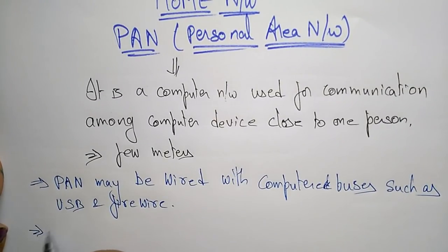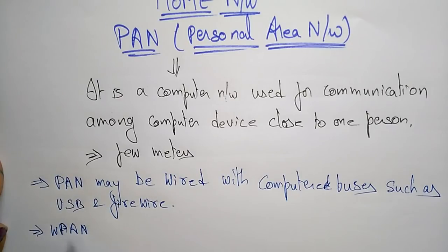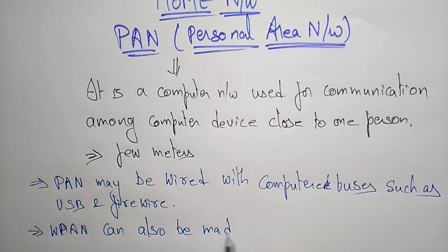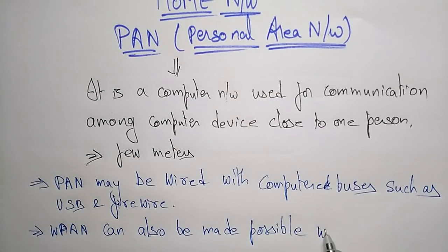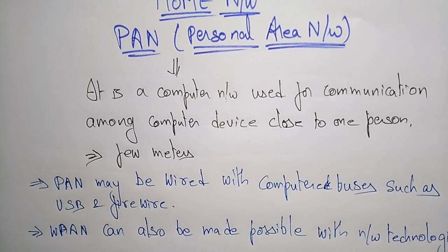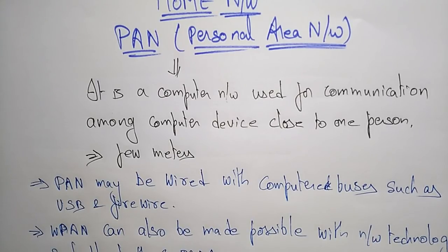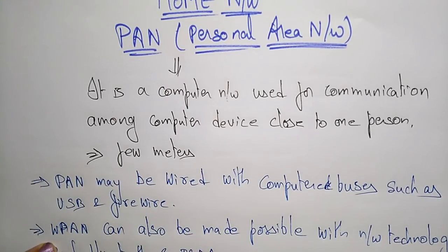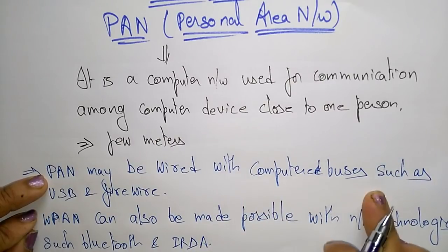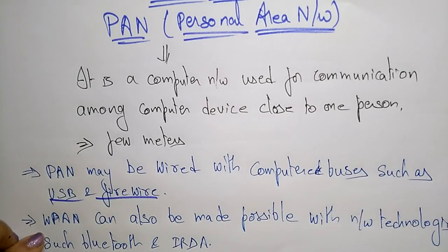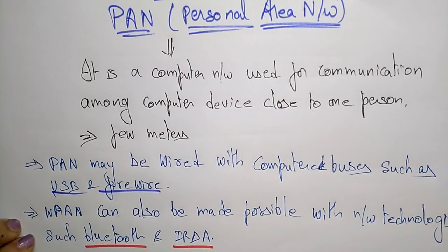You can also use wireless PANs (WPAN). Wireless PANs can be made possible with the help of network technologies such as Bluetooth and IRDA (Infrared Data Association). So wired PAN uses computer buses like USB and FireWire, whereas wireless PAN uses technologies like Bluetooth and infrared.